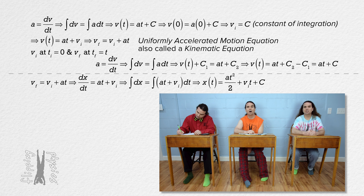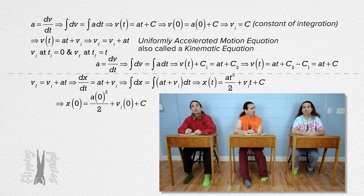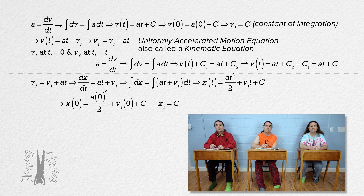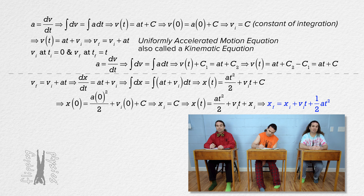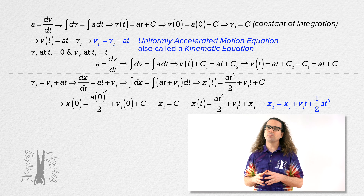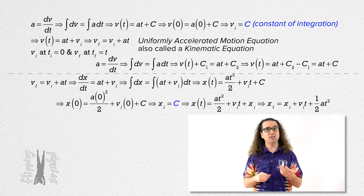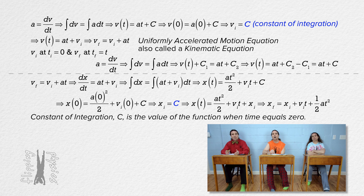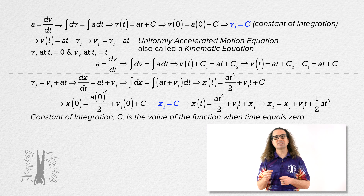Plus the constant of integration C, and we need to solve for C, so we plug in zero for the initial time, and we get that the constant equals the initial position of the function. So we get position final equals position initial plus velocity initial times time plus one half acceleration times time squared, which is one of our uniformly accelerated motion equations. Correct, Bo. And notice that the constant of integration C for both of the equations we just solved for equals the value of the function when time equals zero. The constant of integration is the initial value of the function.